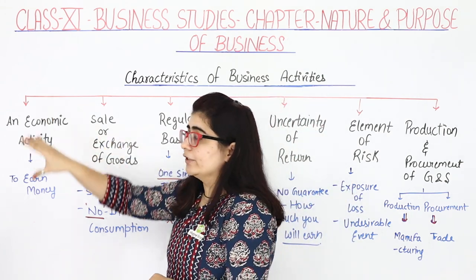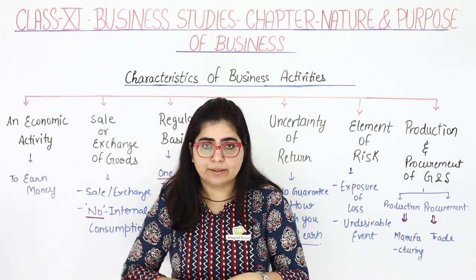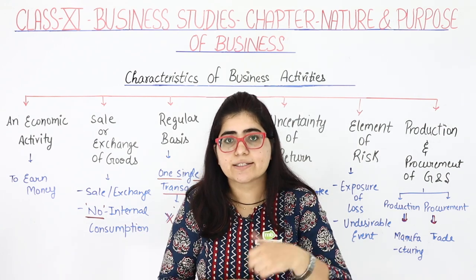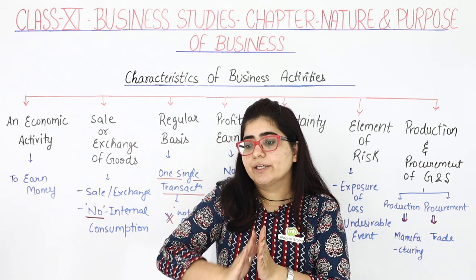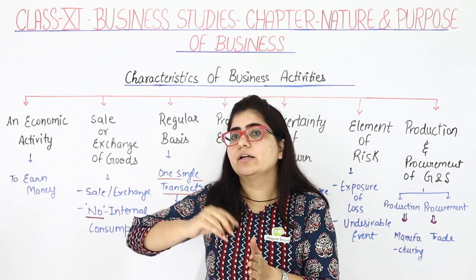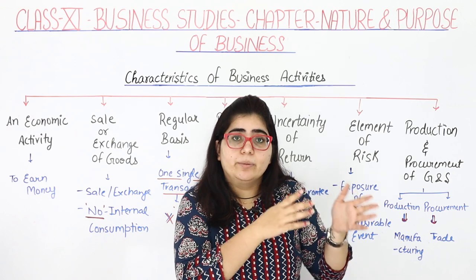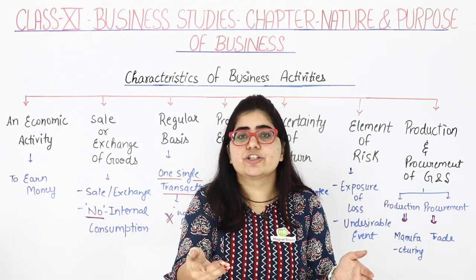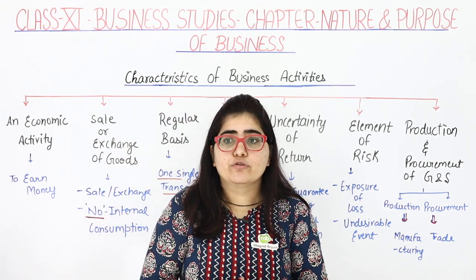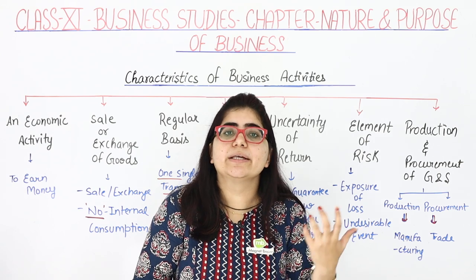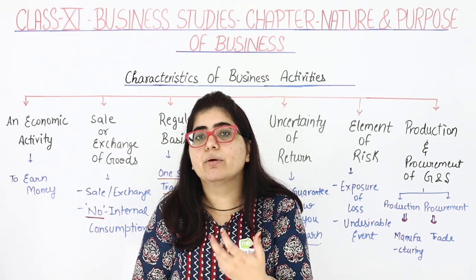Starting with economic activity: as I said in my last video, in society there are two types of activities — economic activity and non-economic activity. An economic activity is one where in return you get money or earn your livelihood. A non-economic activity is done out of love and affection. For example, if you are making a cake for your mother, that is a non-economic activity. But if you are making a cake for a shop, then you are doing an economic activity.